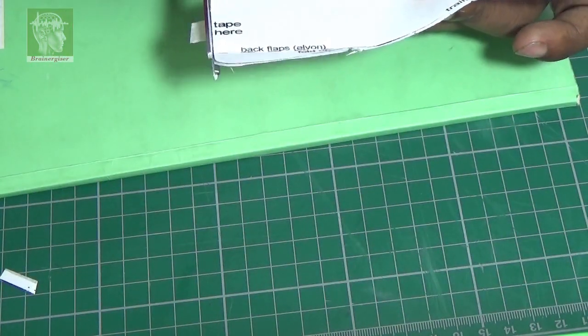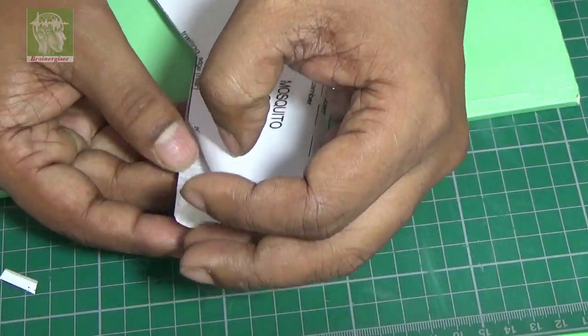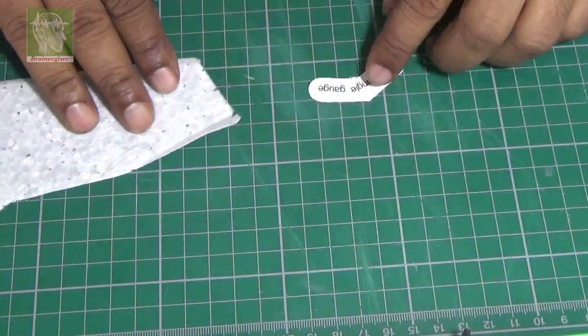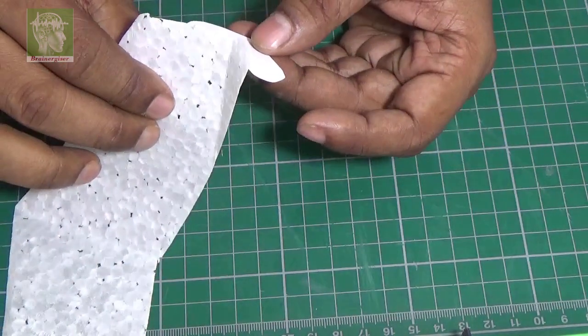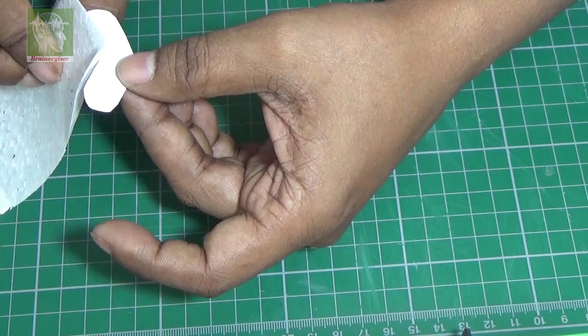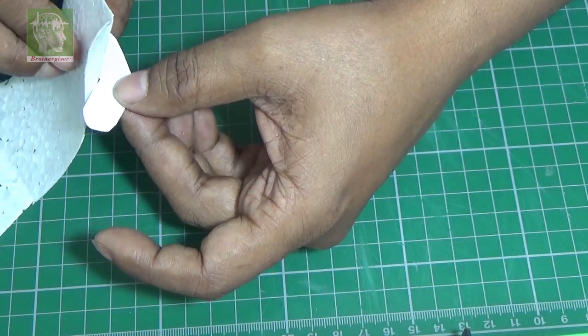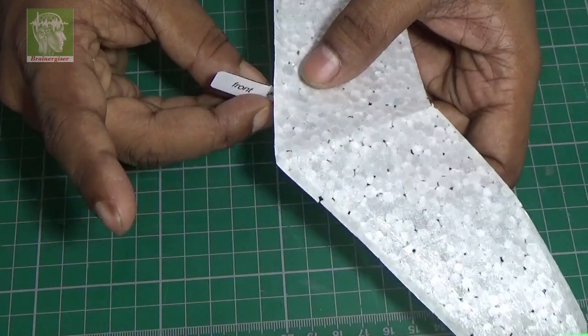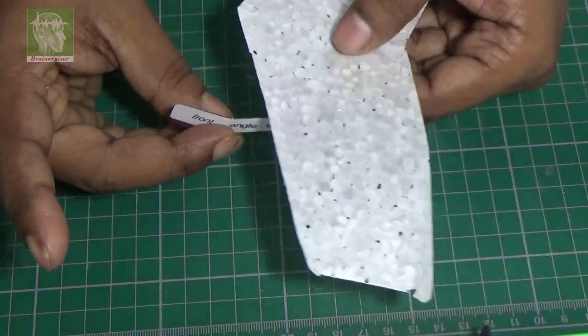Now cut both side the tips and separate the tips and separate the thermocol sheet. Now take the back angle measuring template and measure the angle of the aileron. It will be like this.